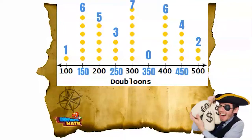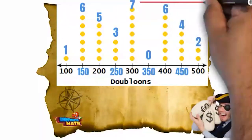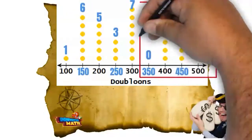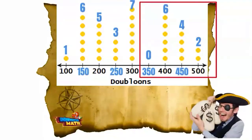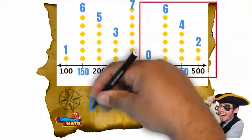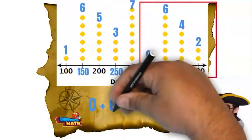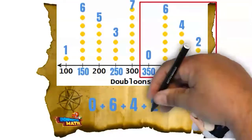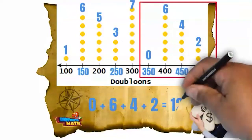Looking at this graph, I'm wondering: how many of these treasures have more than 300 doubloons? To find that answer, we need to add up the number of treasures that have 350, 400, 450, or 500 doubloons. Zero plus six plus four plus two equals 12.